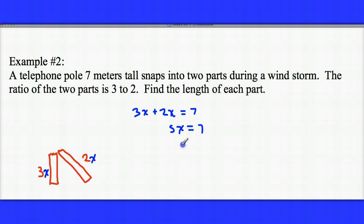And when we do that, we're going to get the value for x, which would be 1 and 2 fifths, or 1.4. Now 1.4 meters isn't the length of either piece of the pole. It's what we have to multiply by 2 and what we have to multiply by 3. So our two pieces are going to be 2.8 meters for the shorter piece.